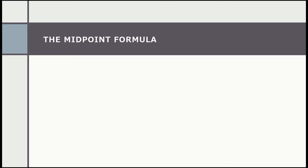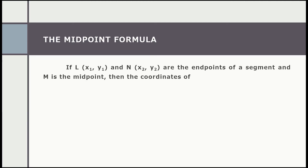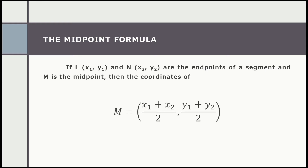Aside from the distance formula, another formula we need to be familiar with is the midpoint formula. If L with coordinates (x₁, y₁) and N with coordinates (x₂, y₂) are the endpoints of a segment, and M is the midpoint, then the coordinates of the midpoint are: x₁ plus x₂ all over 2 for the x-coordinate, and y₁ plus y₂ all over 2 for the y-coordinate.